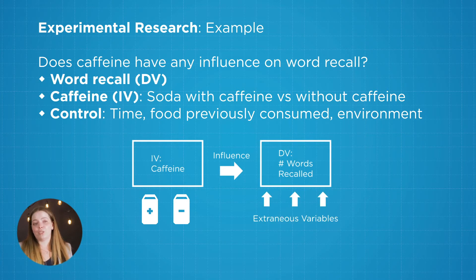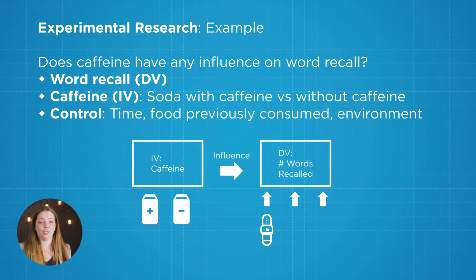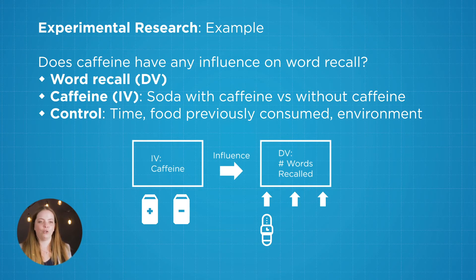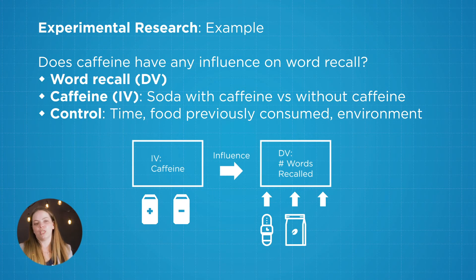Other variables that we might control for here are things like the time of day that you do the experiment. If you're doing it early in the morning, maybe people are wide awake or very tired, and that could affect word recall if participants are doing it at different times of day. Maybe you're not sure if it's the caffeine or the time of day causing different word recall. Other things to consider are whether participants have already consumed tea or coffee — you definitely don't want anyone in your control condition to have already drunk three cups of coffee before they got to the experiment.